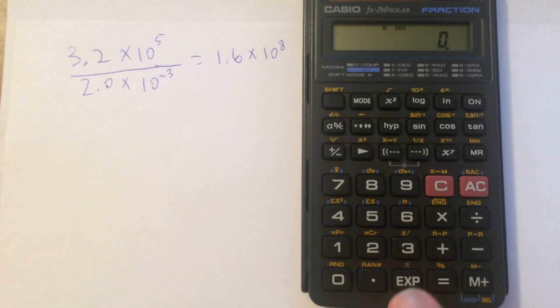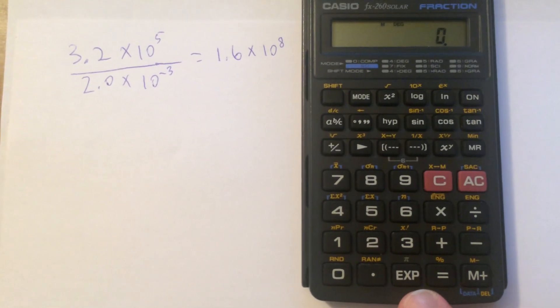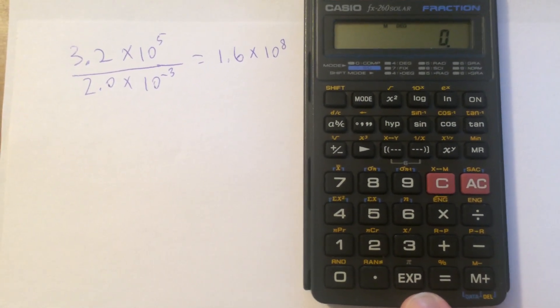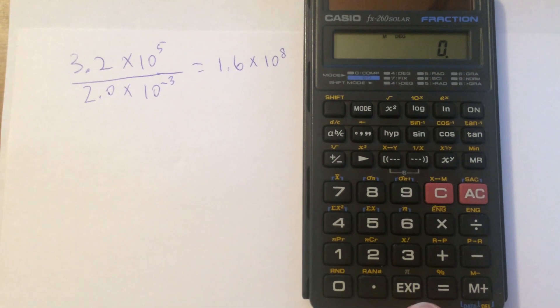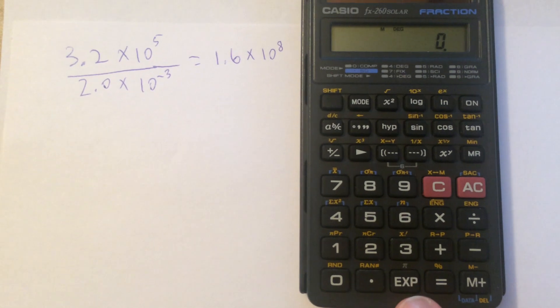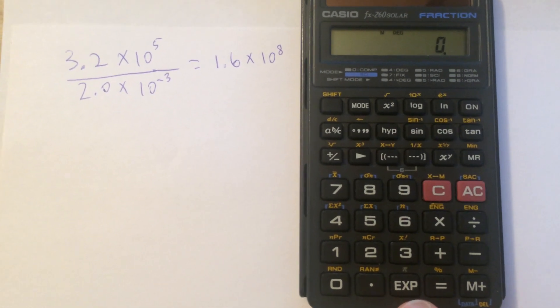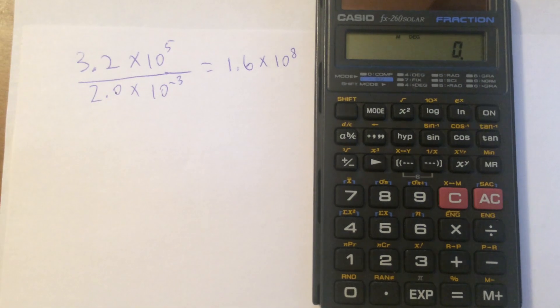There's a button down here called the EXP key. And there will be similar buttons on other calculators. This is for Casio. This is the form they use. And if you want to enter a number in scientific notation, that button replaces the keystrokes times 10, and then specifies the exponent.